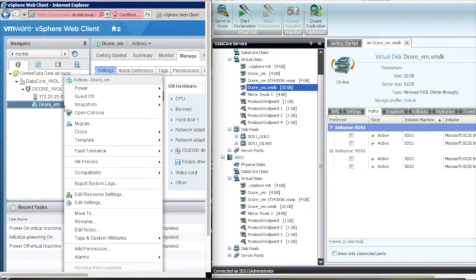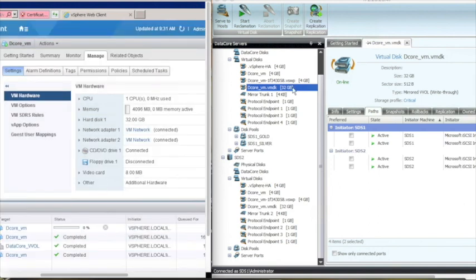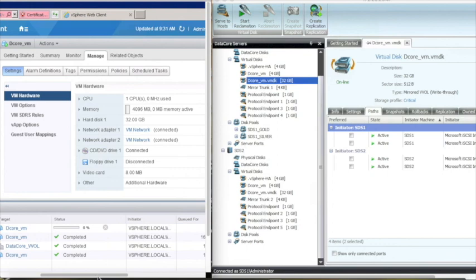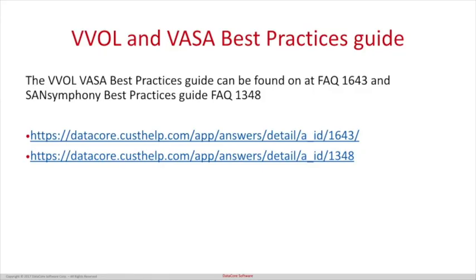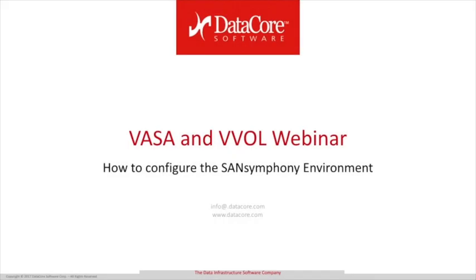Here is a quick clip of vCenter and SanSymphony side by side. You will notice that when the VM is powered off, the VSWP file is automatically removed within the GUI, but the config file and the VMDK file still remain. Please take a look at FAC 1643 and FAC 1348 at datacore.com — they cover the best practices for VVOLs, VASA, and SanSymphony. More detailed information can be found in the online help about protocol endpoints, and for a detailed compatibility chart on VMware ESXi, check out FAC 1556 at datacore.com. That concludes our webinar on VASA and VVOLs.